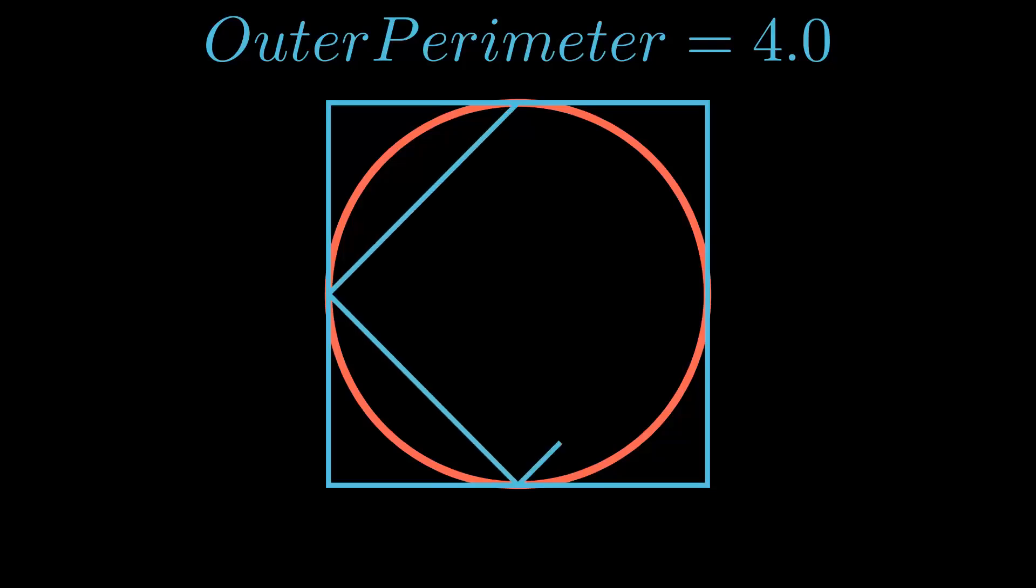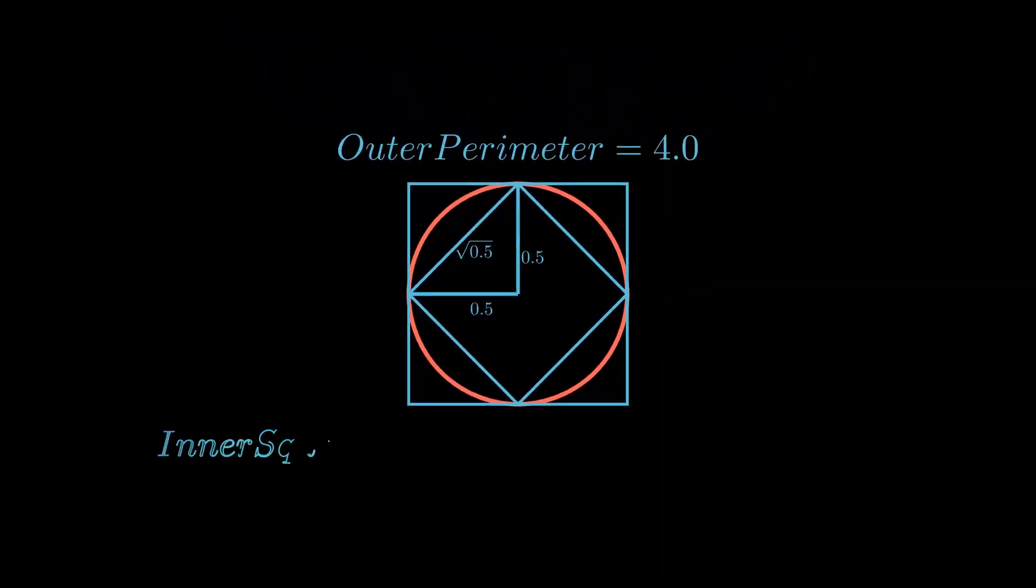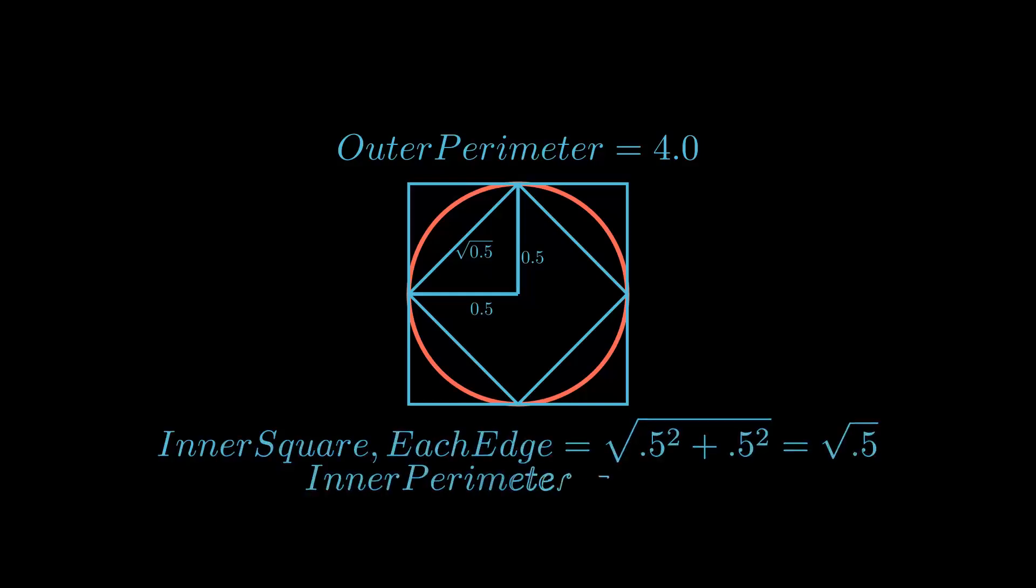Now let's inscribe a second square inside of the circle. We can cut that square into triangles that each have sides of length 0.5. That means, by using Pythagorean theorem, the edges of the inner square have a length of square root of 0.5. So the total perimeter is 4 times the square root of 0.5, or approximately 2.828. So we now have an upper and a lower bound for pi. This isn't a great approximation, but we can do better if we don't use squares.